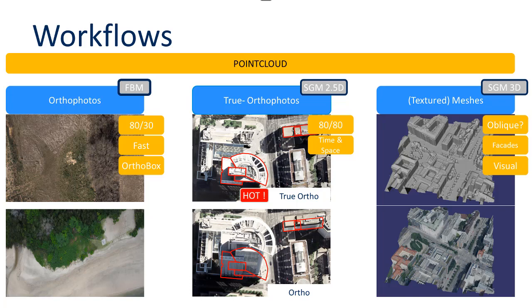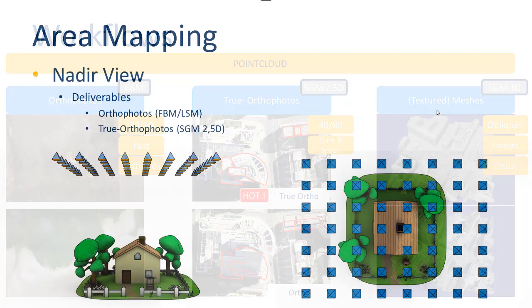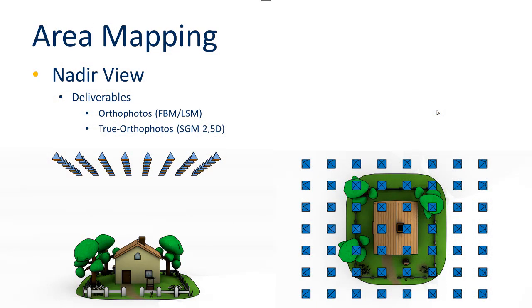All three products — the autophoto, the true autophoto, and the textured mesh — are available in Match3DX for processing. For the 2.5D process, an 80-80% overlap flight is necessary to get viewing angles on each location so that a very good dense point cloud can be extracted.